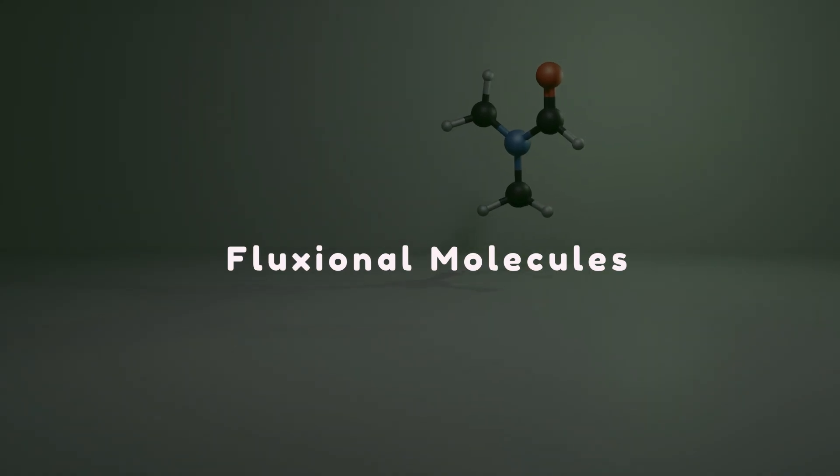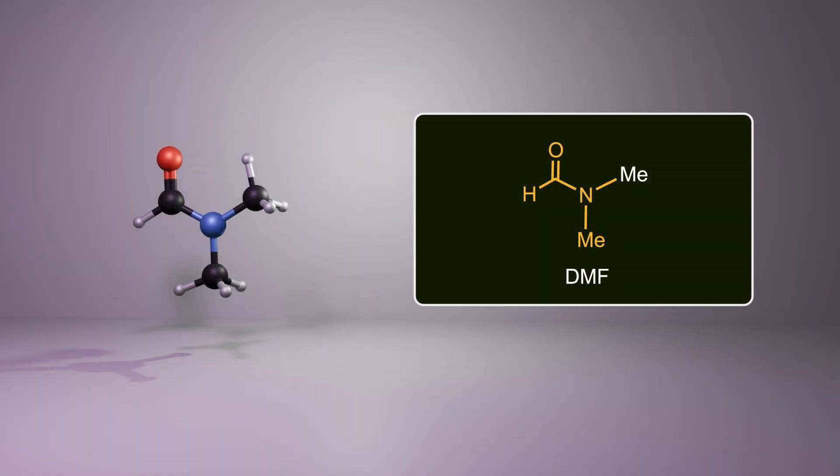Fluxional or non-rigid molecules are molecules that undergo dynamic movements such that some or all of their atoms interchange. Dimethylformamide is a classic example of a fluxional molecule. If you think of it as a rigid molecule, two methyl groups would seem different because one is cis to the carbonyl group and the other is trans.